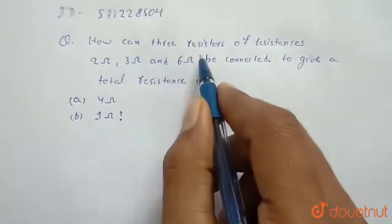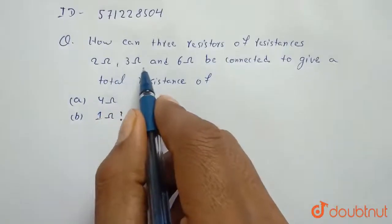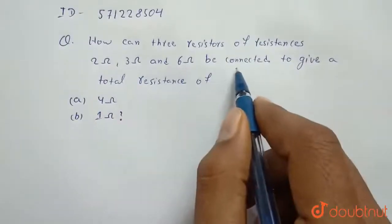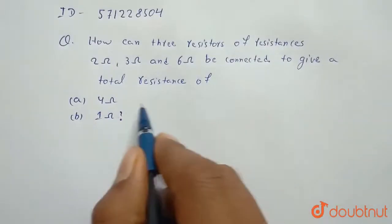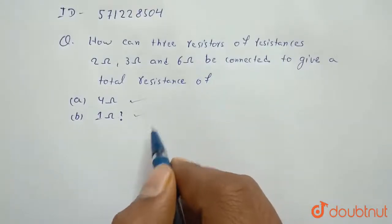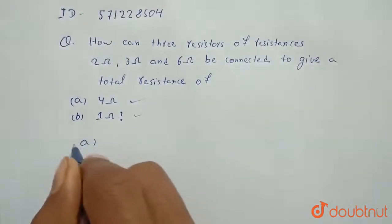How can three resistors of resistances 2 ohm, 3 ohm and 6 ohm be connected to give a total resistance of first 4 ohm and second 1 ohm? So now we will see first.